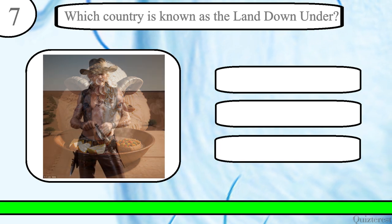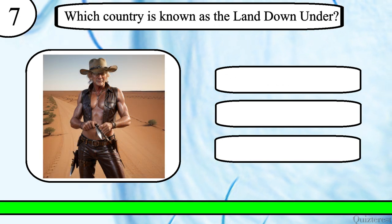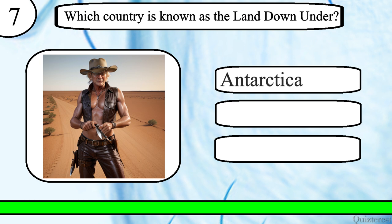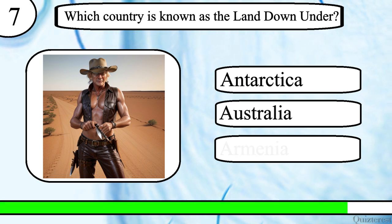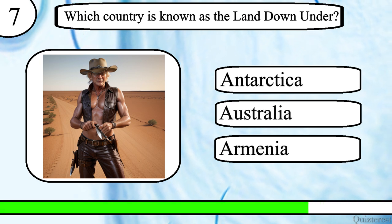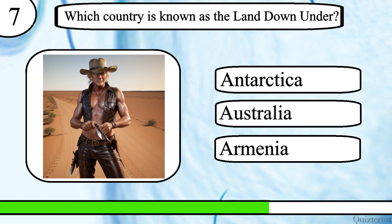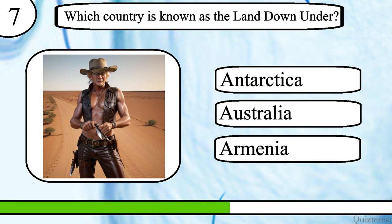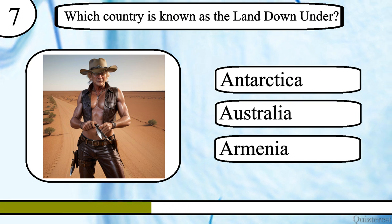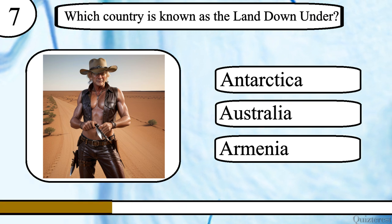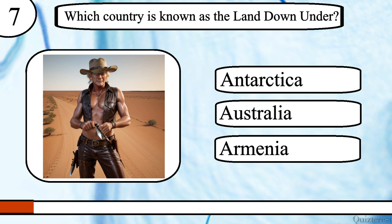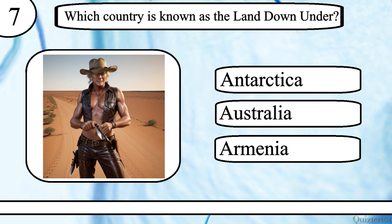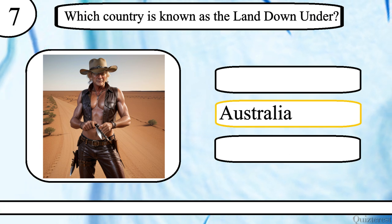Question 7. Which country is known as the land down under? Antarctica, Australia or Armenia? The correct answer is Australia.